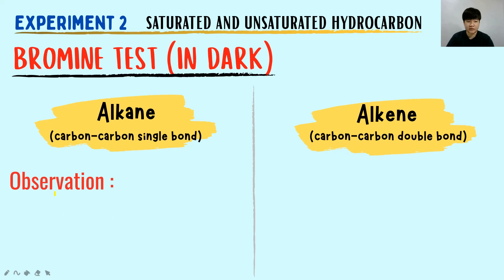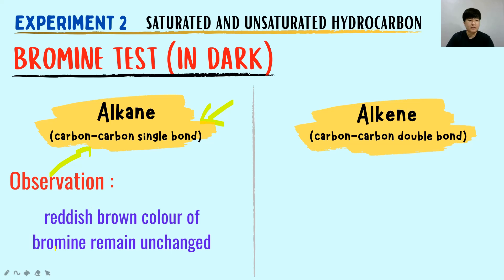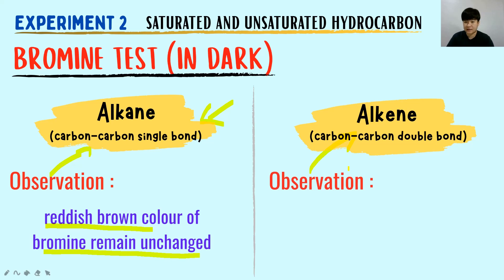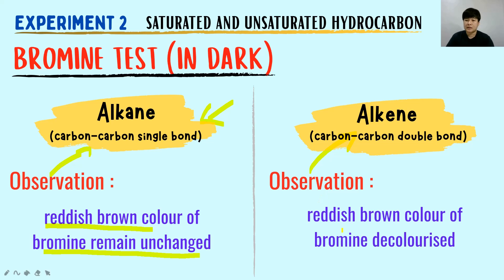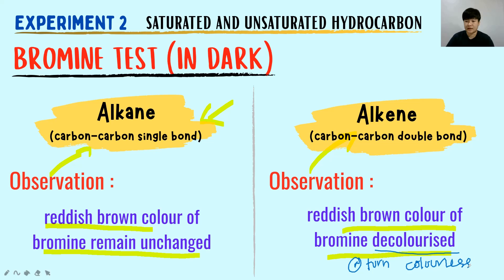For the observation of the bromine test in alkane, the reddish-brown color of bromine remains unchanged. While the observation for alkene is that the reddish-brown color of bromine decolorizes. You can always use the word 'turn colorless' to replace 'decolorize' — they are the same.